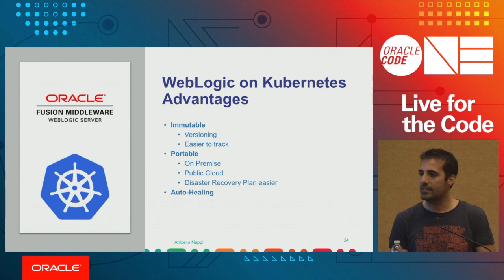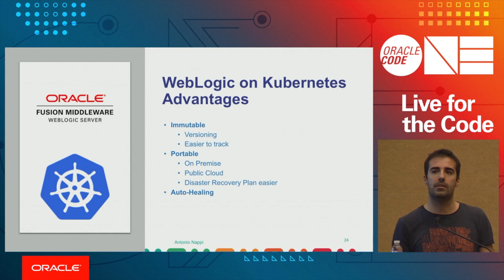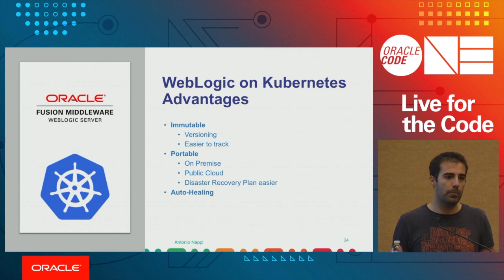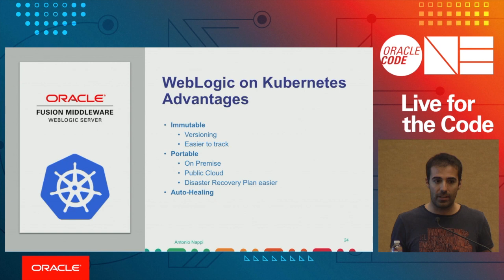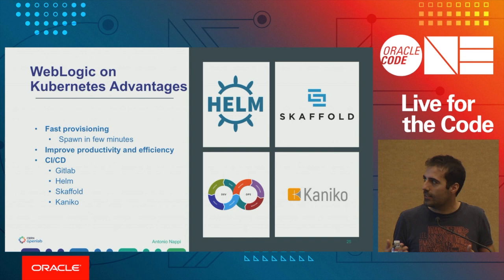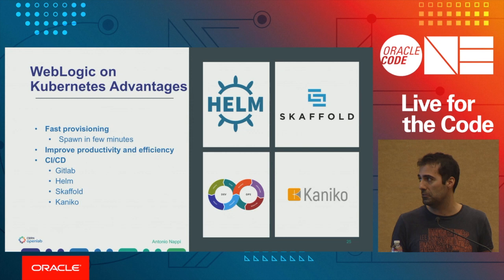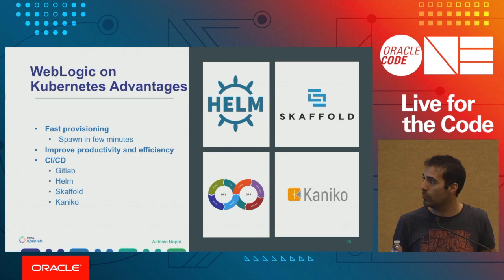Another benefit is auto-healing: if a container crashes, it is automatically restarted by Kubernetes without human interaction. Previously, managed servers on VMs would get stuck and we wouldn't notice until a user reported it. With liveness probes in Kubernetes, you can automatically check status and restart the pod without downtime or human interaction. Deployment is also much faster — we can spin up a WebLogic cluster in a few minutes after defining the Docker image, compared to at least half a day before.